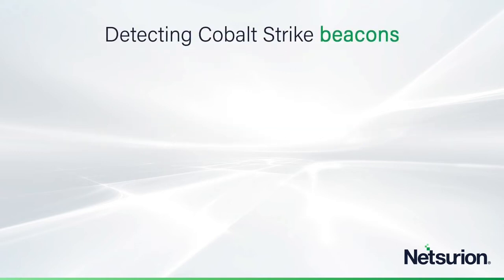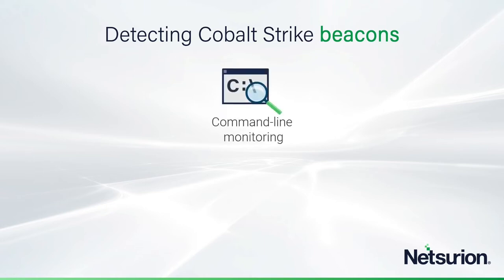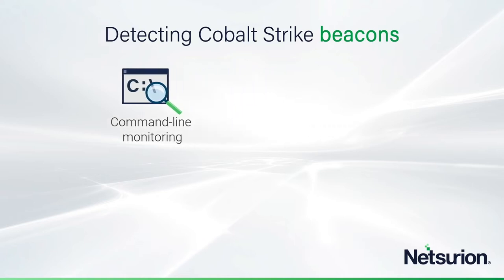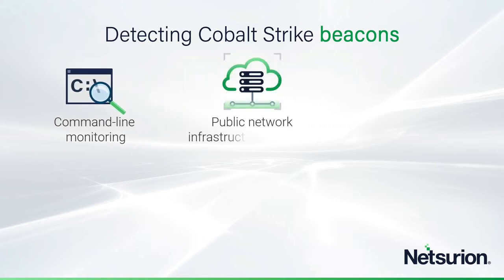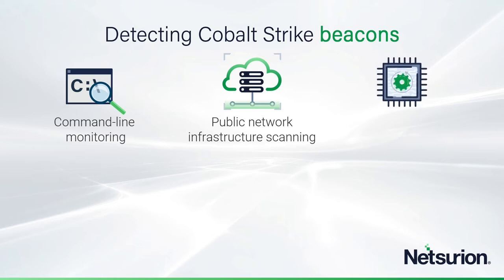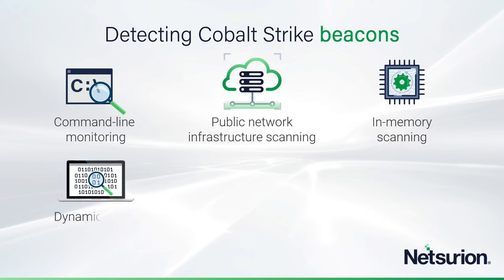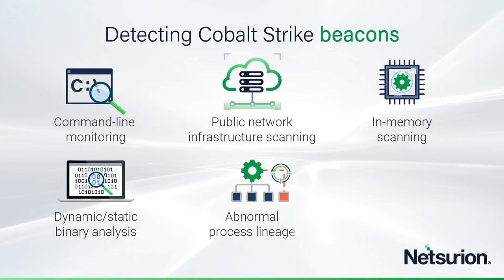Some brute force detection methods — and this is true even of the latest patched versions — include looking at command lines and identifying things that don't look right. That's actually how it was found in the example coming up. You could scan public network infrastructure and identify, from inside your network, whether anyone is accessing a known Cobalt Strike server. You could upgrade your endpoint protection: newer EDR solutions, as opposed to traditional antivirus, perform in-memory scanning, analyze binaries dynamically and statically, and try to find abnormal process lineage — where a process launched but not from the usual path, folder, or parent process.